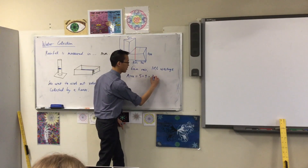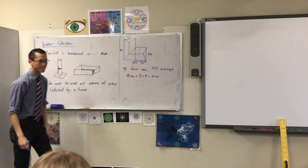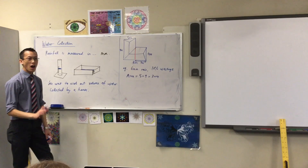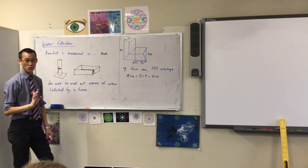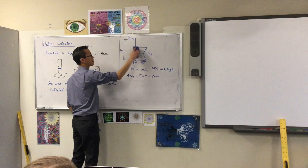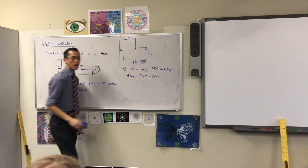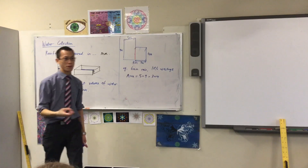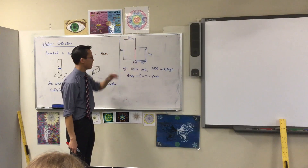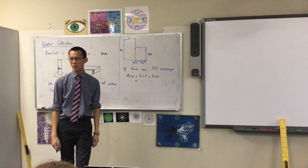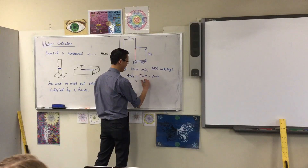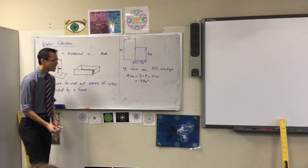I'm not worrying about any triangles — I'm just thinking about this flat shape. Those extra lines in the diagram show it's a roof and it angles up, but I only care about looking at it from the top. So we can work these numbers out: 45 plus 12. We've worked out the area.